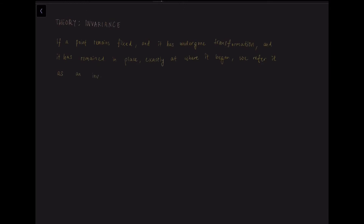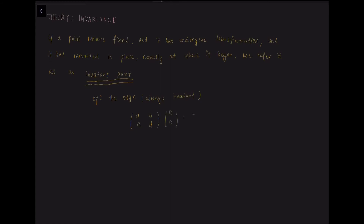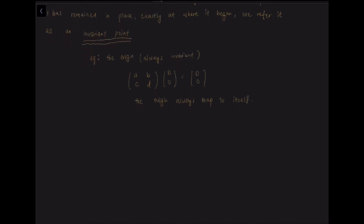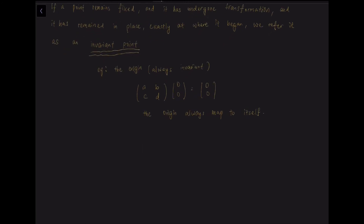Next, we look at the theory of invariance. If a point remains fixed after undergoing transformation through a matrix and ends up exactly where it began, we call it an invariant point. There is a universal invariant point, which is the origin, and it is always invariant. We let the origin undergo transformation by matrix ABCD, and after multiplication the point remains at the origin (0, 0), unchanged. So the origin always maps to itself.